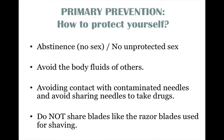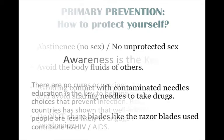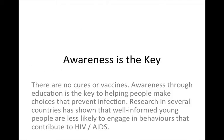HIV and AIDS are preventable. How to protect yourself: abstinence, which means no sex or no unprotected sex. You can avoid the body fluids of others, avoid contact with contaminated needles, avoid sharing needles to take drugs, and do not share razor blades used for shaving. Awareness is the key — there are no cures or vaccines. Awareness through education is the key to helping people make choices that prevent infection. Research in several countries has shown that well-informed young people are less likely to engage in behaviours that contribute to HIV and AIDS.